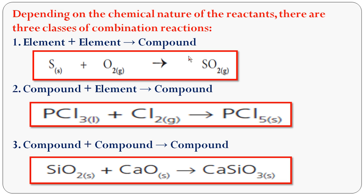The second type is compound + element → compound. For example, phosphorus trichloride (a compound) reacts with chlorine gas (an element) to form phosphorus pentachloride (a compound). The third class is compound + compound → compound. For example, SiO₂ (silicon dioxide) reacts with CaO (calcium oxide) to form CaSiO₃ (calcium silicate).